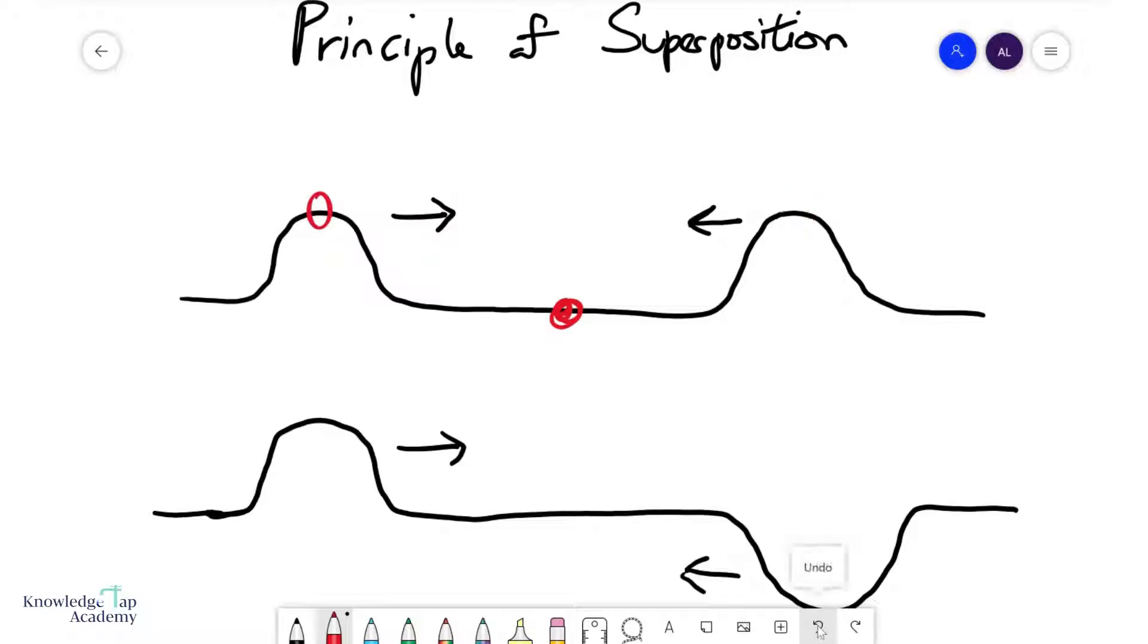So, for example, if let's say this wave had a displacement of 5 units and this wave had a displacement of 4 units, then you would produce something over here with a displacement of 9 units.